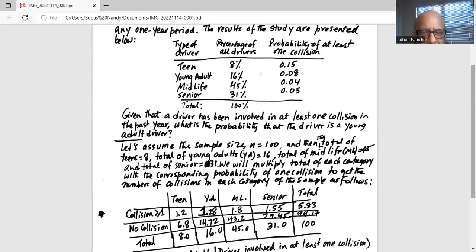So it is 0.85 times 8, which is 6.8 and so forth for the other columns. Now we total the columns, we get the total number of teens, young adults, midlife and senior, and we total each row to get the first row, we will get a collision of at least one, which is 5.83.